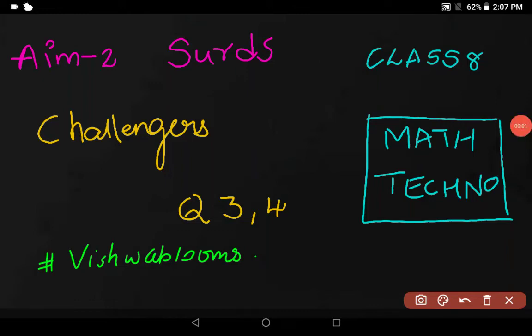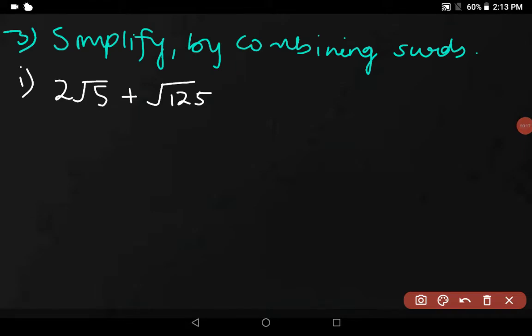Hi everyone, welcome to Vishwa Blooms. In this video, we will be looking at Maths Techno Aim to Search Challenges, questions number 3 and 4 of class 8. So we will begin. Now we are going to look at the third question: simplify the following by combining the similar surds.